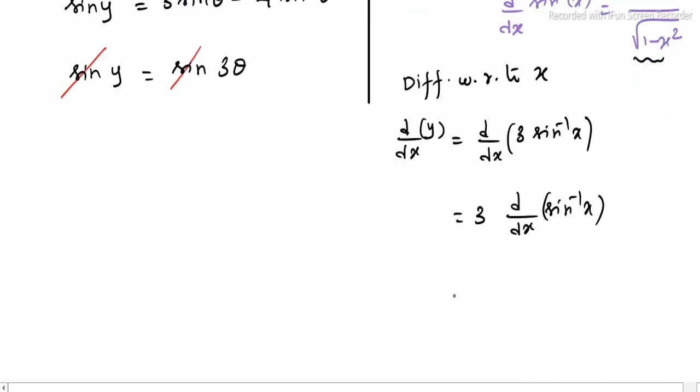So 3 is constant. Use the formula here. So 3 into 1 divided by square root of 1 minus x square. So this is dy by dx value.